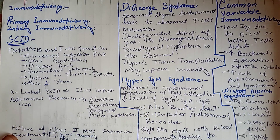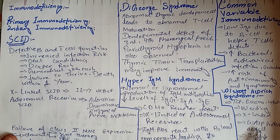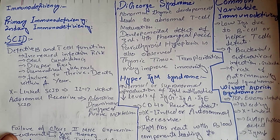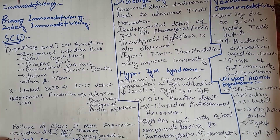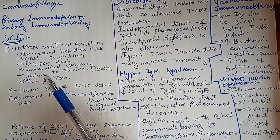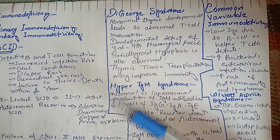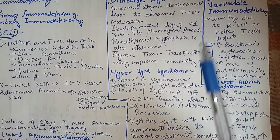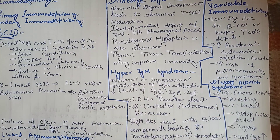Wiskott-Aldrich syndrome is characterized by thrombocytopenia, eczema, and increased infection risk. Bleeding may be present due to thrombocytopenia, and it is X-linked. The defect is in the WASP protein gene, leading to low IgM levels while IgA and IgE may be increased and IgG may be normal. The defective IgM leads to compromised immunity.